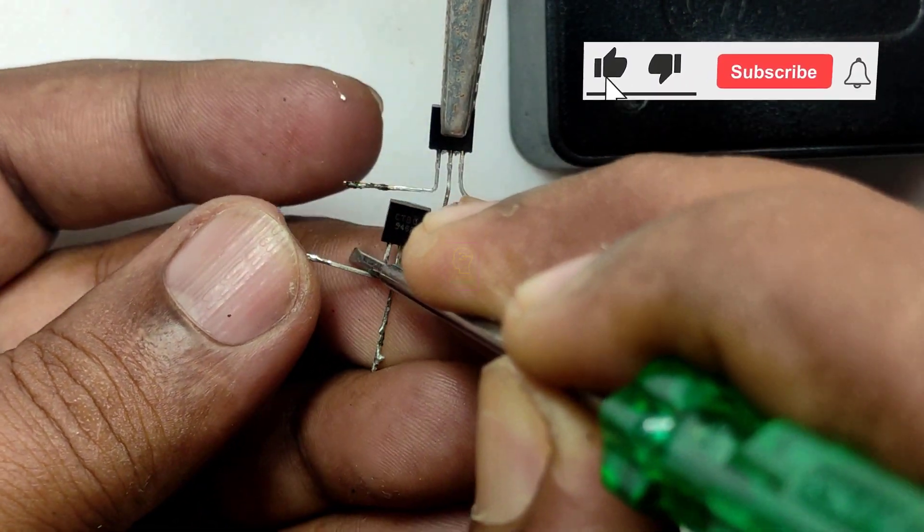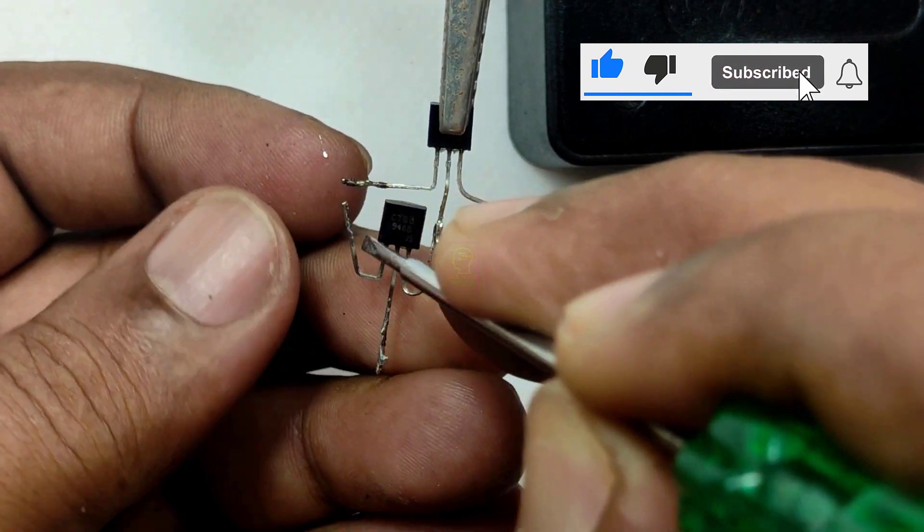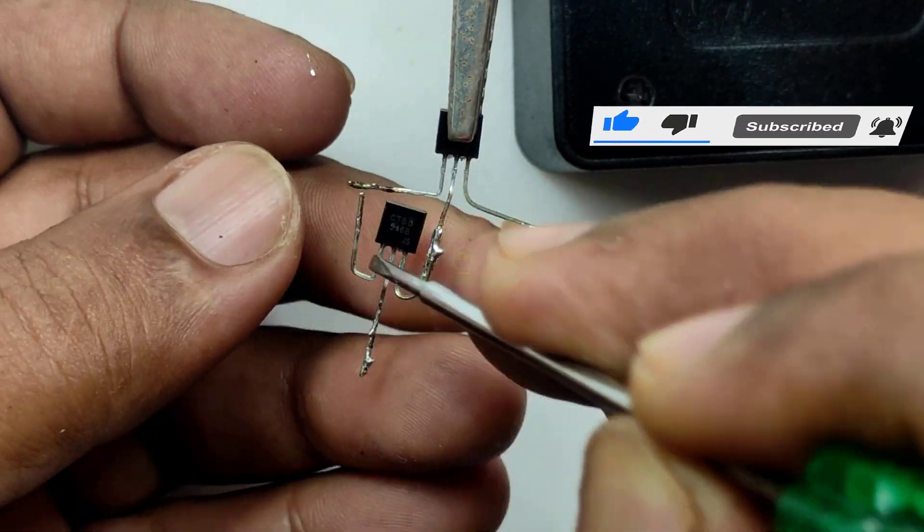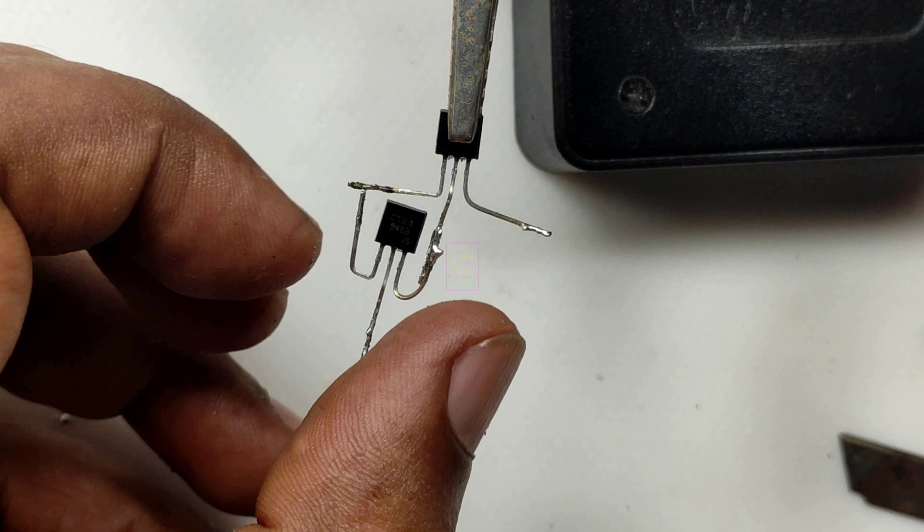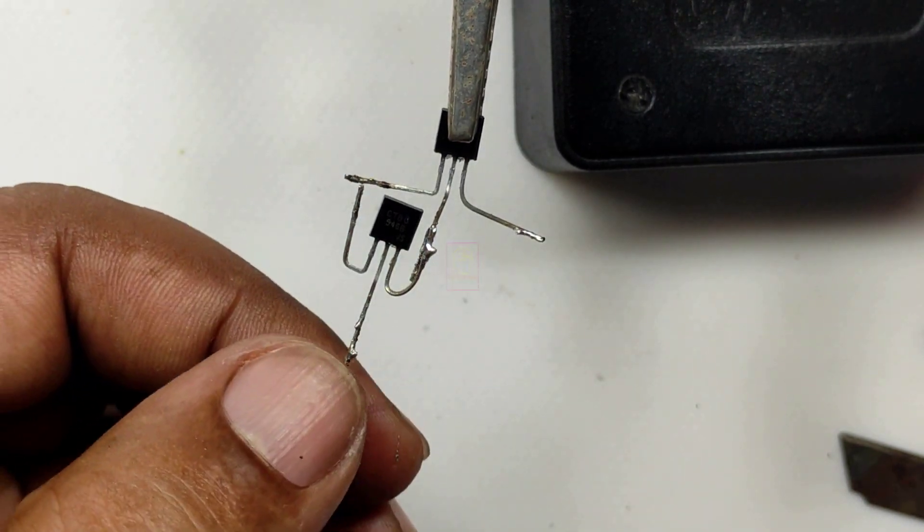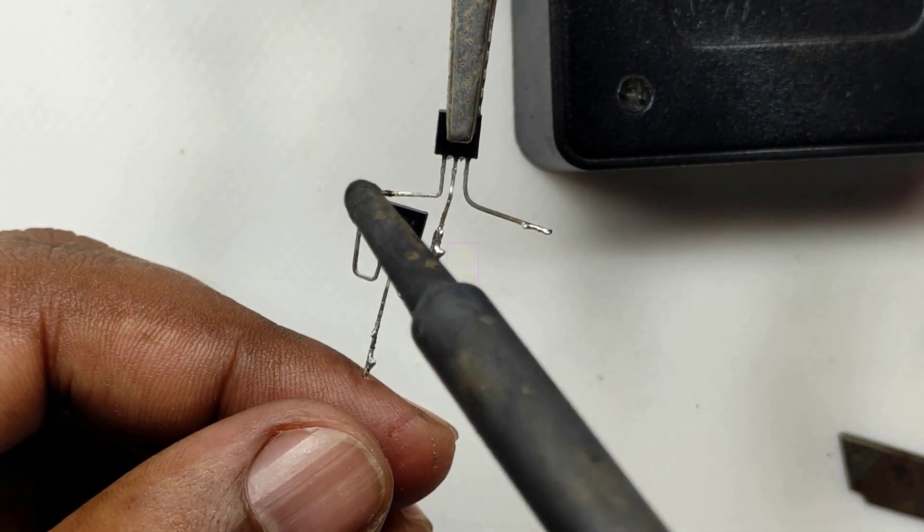Now we are using our own sensor module using BC 546 or BC 547 as a Darlington pair and photodiode. Here the sensing angle is more than 150 degrees, which is pretty good as a sensing alarm.